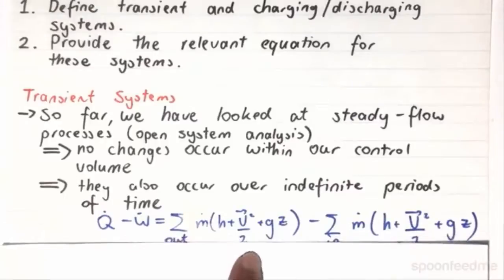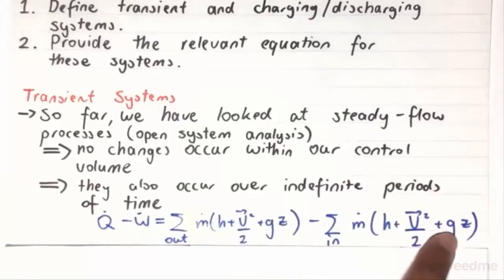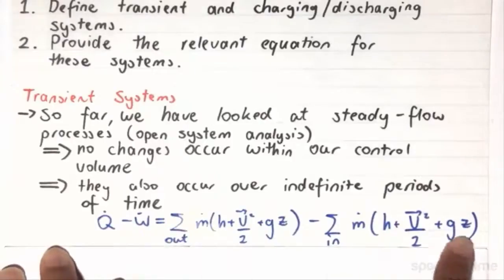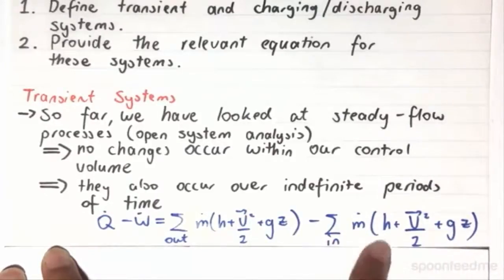If you look back at the open system first law analysis, we have the equation Q dot minus work dot is equal to the sum of the mass flow rates out times by this term here, minus the sum of the mass flow rates in times by their respective enthalpies, kinetic energies, and potential energies.